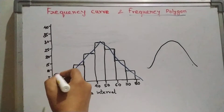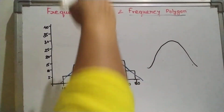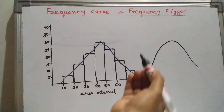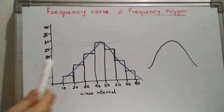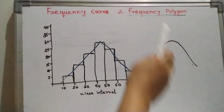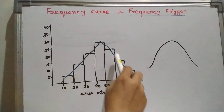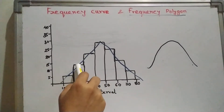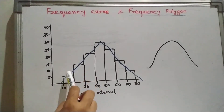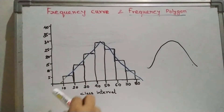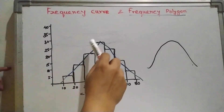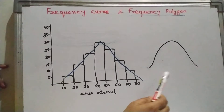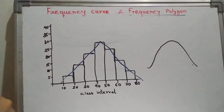If you join the points, we do not always get a smooth shape. Sometimes it will be high then low, high then low, so we get a zigzag type shape — that is called a frequency polygon. If you find the midpoints of the top of the rectangular bars and join them smoothly, then it is called a frequency curve; otherwise it is called a frequency polygon.